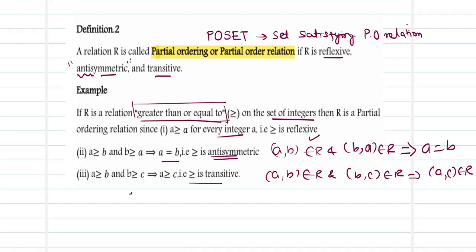Similarly, the relation 'less than or equal to' on the set of integers can also be shown to be a partial order relation. Similarly, the relation of 'subset of' — where A is a subset of B — defined on sets themselves, can also be proved to be a partial order relation.